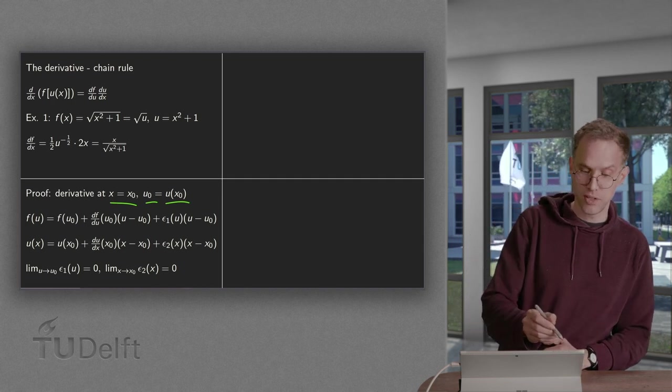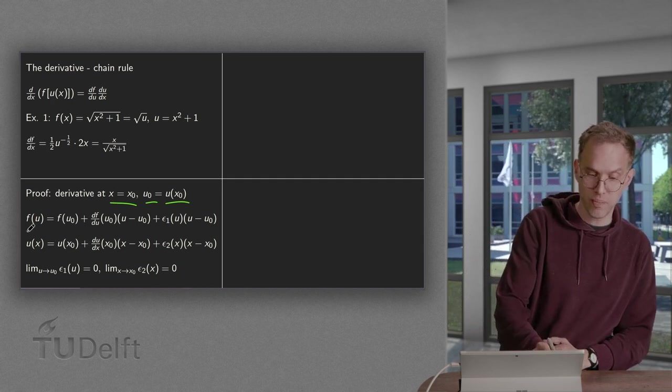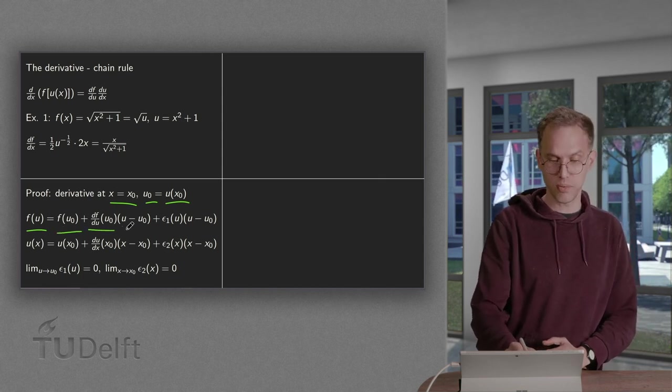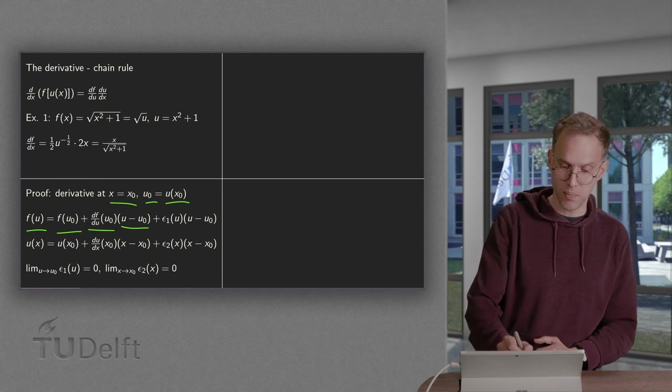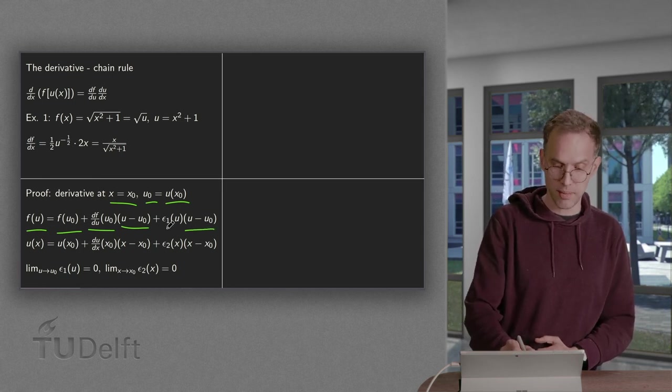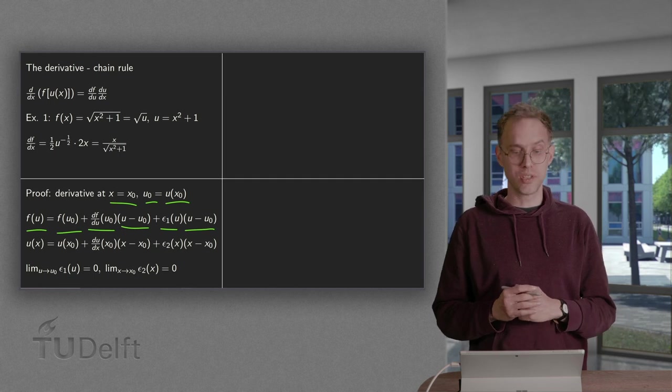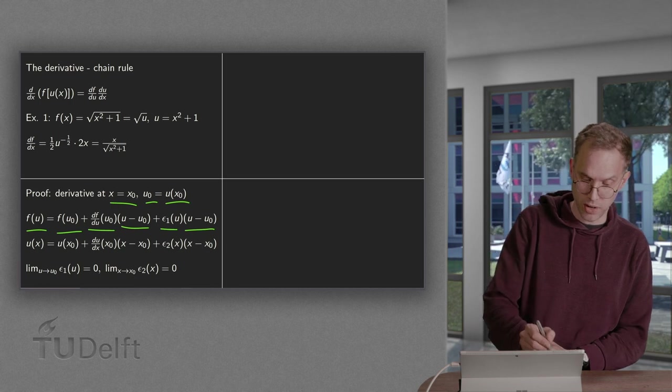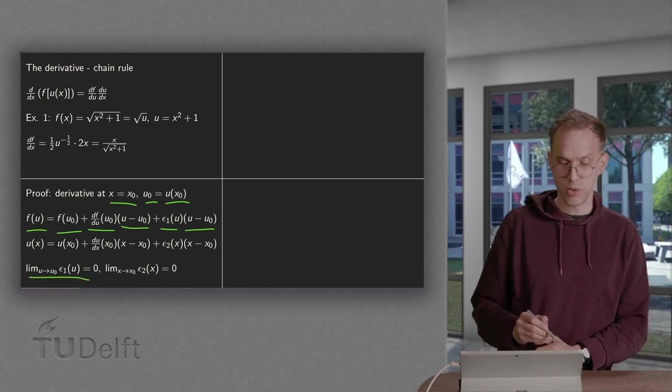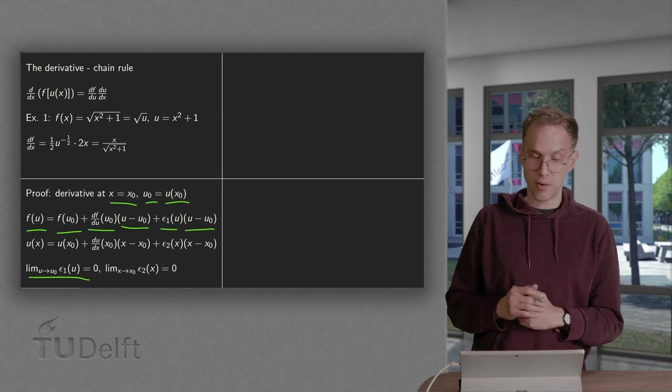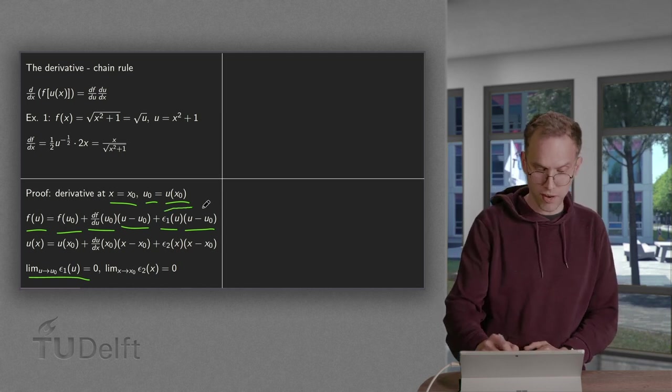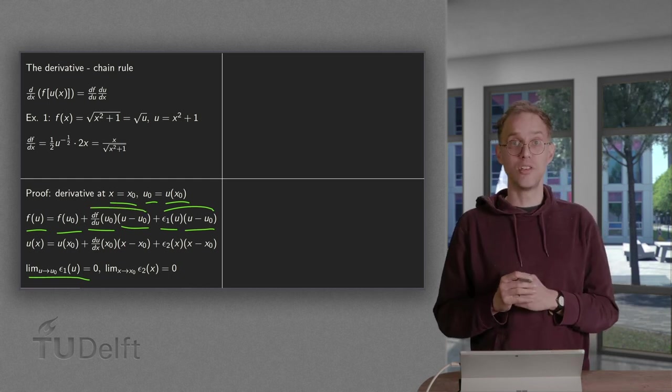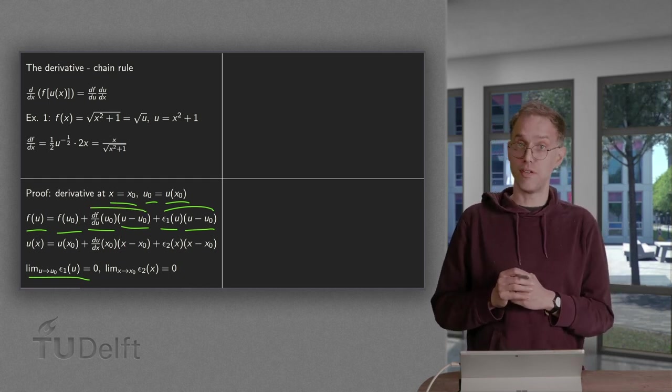Now, around this point we know that f(u) is equal to f(u0) plus df/du at u0 times u minus u0 plus some remainder, epsilon 1 of u times u minus u0, which goes to 0 if you send u to u0. So if you send u to u0, your epsilon 1 of u goes to 0. So this term goes fast to 0 if you send u to u0 than this term. So here you basically use a theta approximation of f of u.